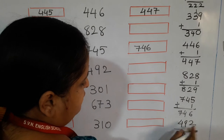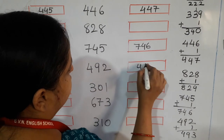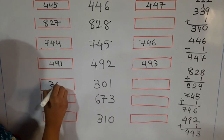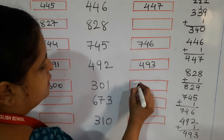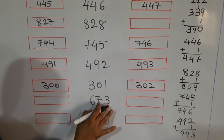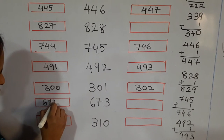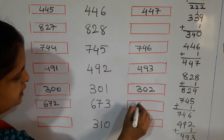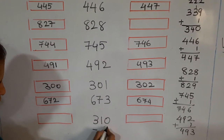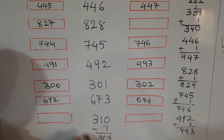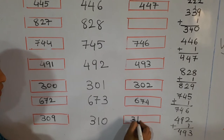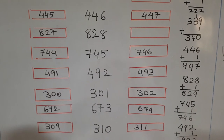491 is the before number for 492, and adding 1 gives 493 as the after number. Now doing directly: 301 minus 1 gives 300, and plus 1 gives 302. Next, 673: minus 1 gives 672, and plus 1 gives 674. For 310: minus 1 gives 309, and adding 1 gives 311.